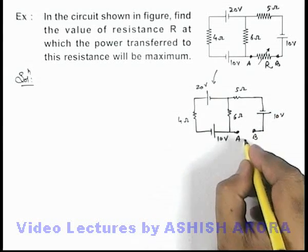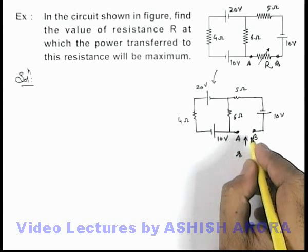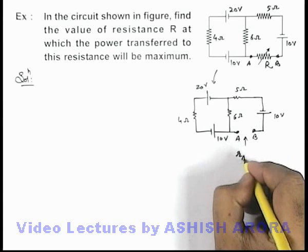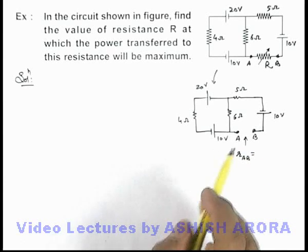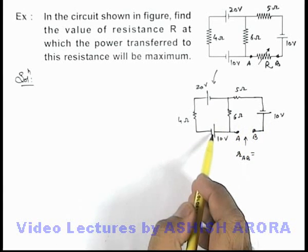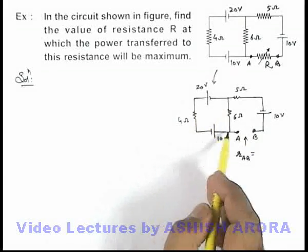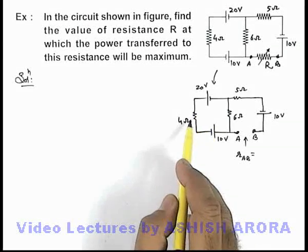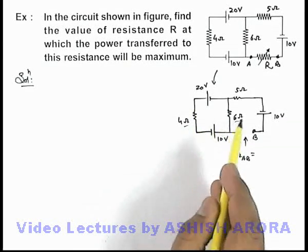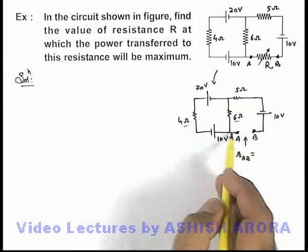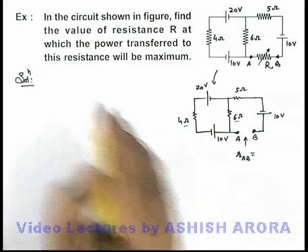Now in this situation, if we calculate the internal resistance of this circuit between points A and B, we can see that R_AB is found by replacing all the batteries with straight wires since the batteries are ideal. After replacing batteries by straight wires, this 4 ohm resistance will come in parallel with the 6 ohm resistance, and this combination is in series with the 5 ohm resistance across terminals A and B.